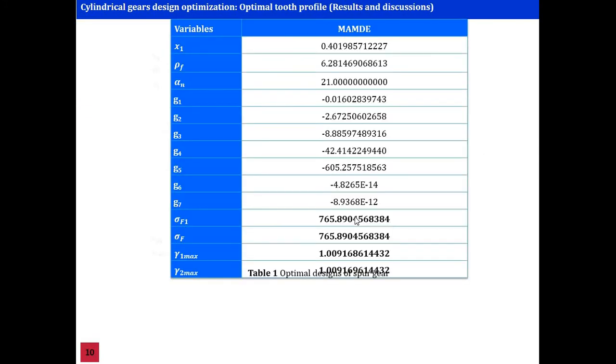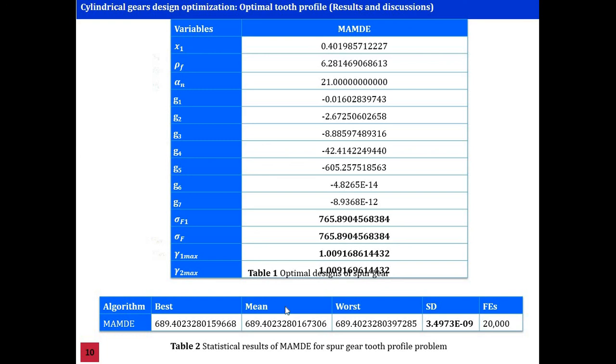The results of the optimization are presented in Table 1. It can clearly be seen that the optimization results found in this research led to perfect balancing in both of bending stresses and the specific sliding. The statistical results of the used method are presented in Table 2. From the small value of standard deviation, it is clear that our method is very robust.